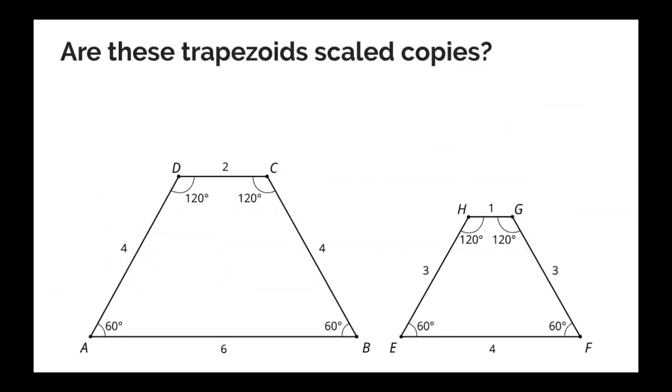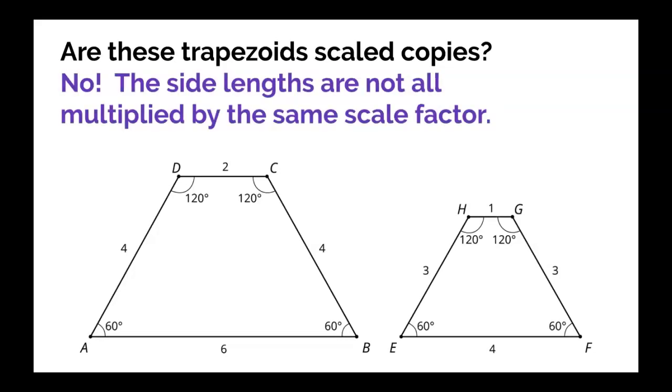Look at these two trapezoids. Are these trapezoids scaled copies? I hope you answered no, because even though the corresponding angles appear to be congruent in this situation, the side lengths are not all multiplied by the same scale factor.